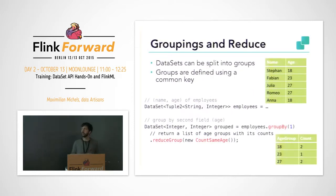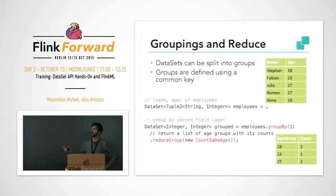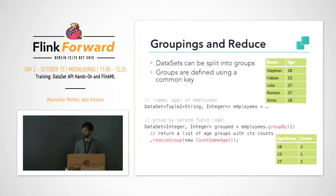In the word count we saw you can group by, and that means effectively you split your dataset into groups — like we did in the word count where we grouped all the words that were actually the same word. You might have a dataset where you have name and age of people — an employee dataset — and you might want to find out which age group in your company is the largest one. You can group by age, which is the first field of the tuple, and then apply a reduce function to count the people in the same age group.